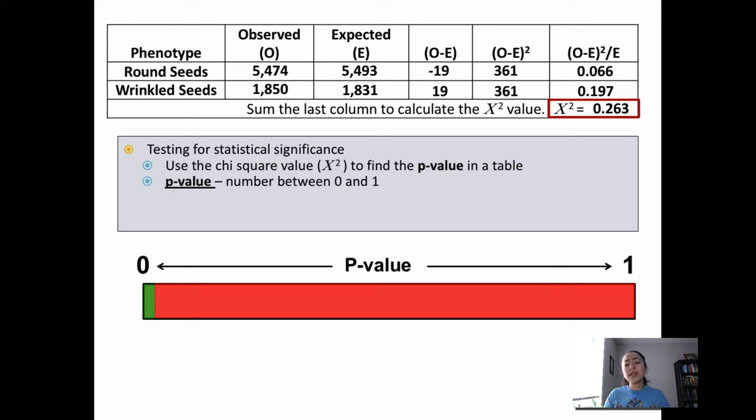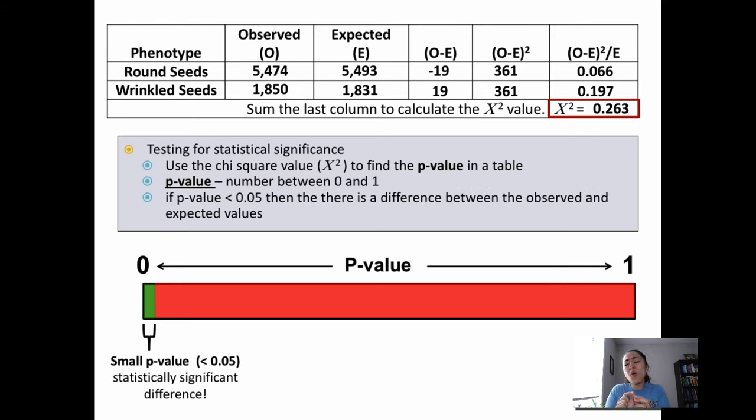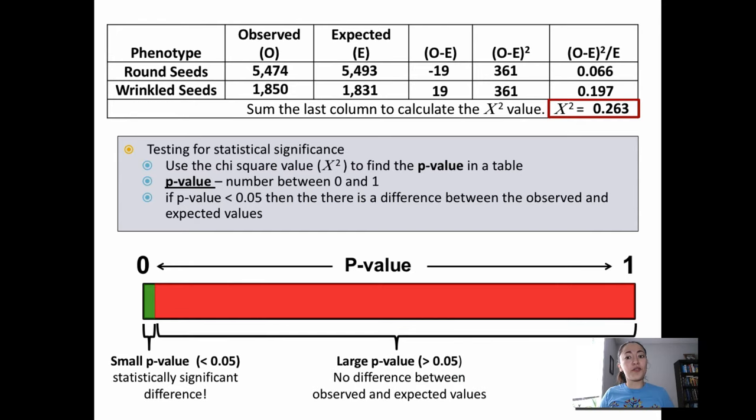Only if the p-value is very small, so less than 0.05, do we say that there's a difference between the observed and expected values. If the p-value is greater than 0.05, then there is no significant difference between what was observed and what was expected. So only a small p-value will tell us that there is a difference.